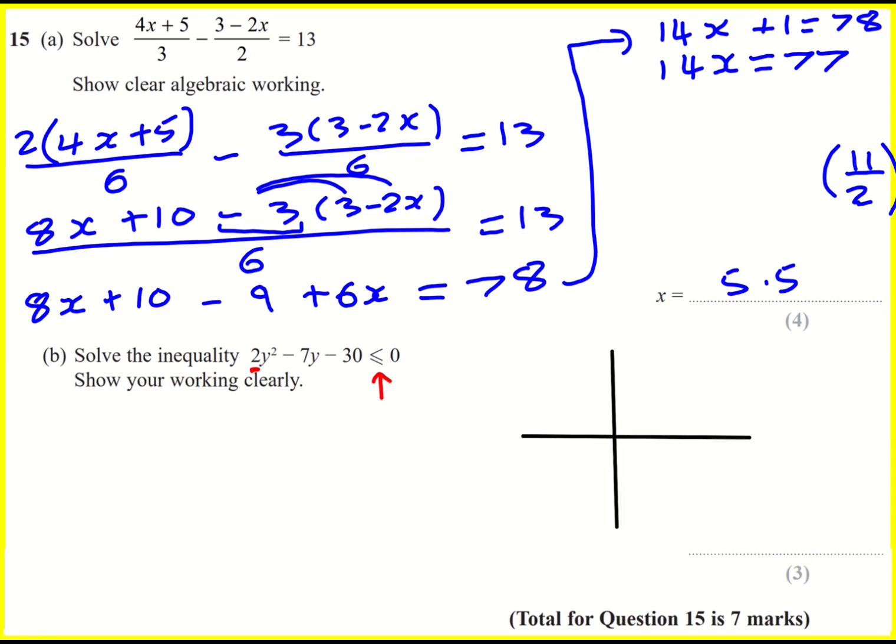There's three ways to solve a quadratic equal to 0. We've got factorizing, completing the square, and quadratic formula. I'm going to talk about factorizing and quadratic formula here. So factorizing this sort of quadratic can be quite tricky. If it's going to factorize, it's going to be 2y and y. That's the only way it could work.